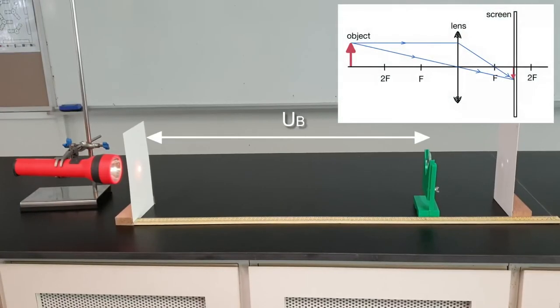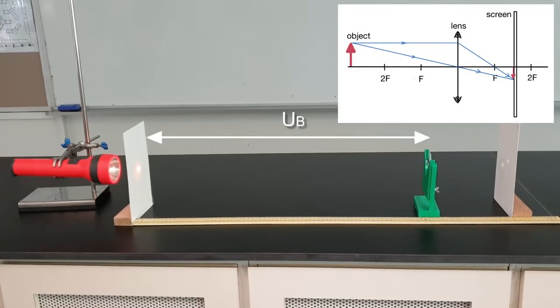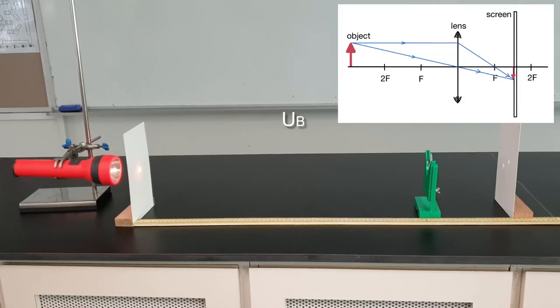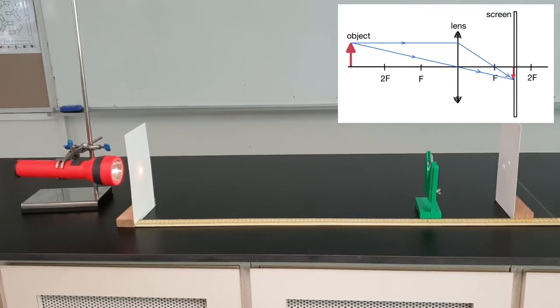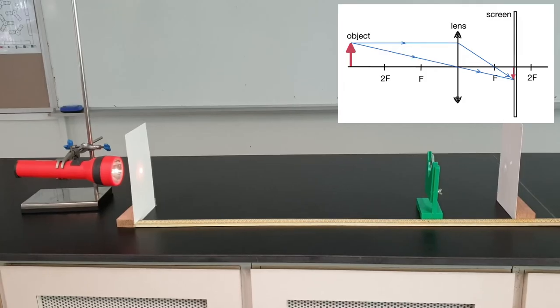That will be your UB. From theory, you know this is the case where the object, the cross wire, is more than 2f from the lens, which is why you get a real, inverted, diminished image.